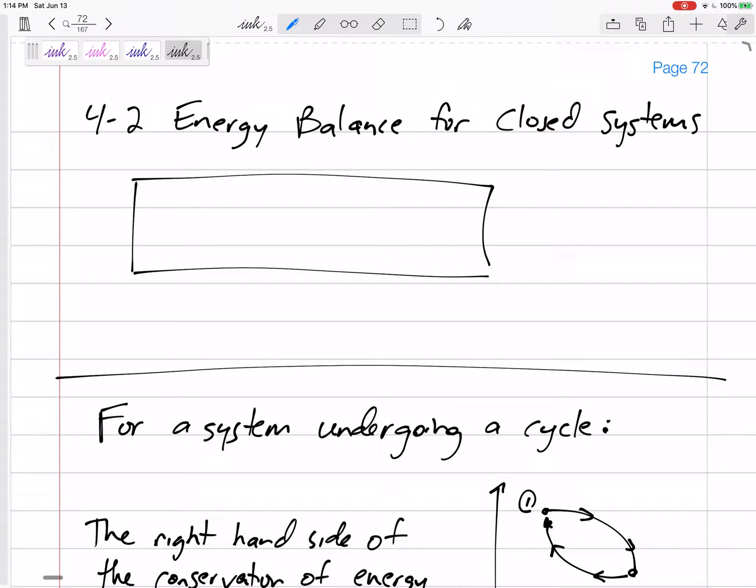Okay, so for chapter 4 we're looking at closed systems. 4.1 was just the boundary work, just focusing on the boundary work done by or on a system to move the boundary, to expand or compress. Okay, but let's look at more than that. Let's look at more than just the boundary work. Let's look at all the work, all the heat, all the energy. Let's look at an energy balance for a closed system.